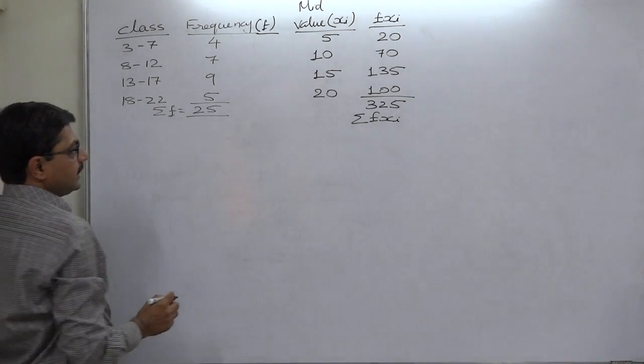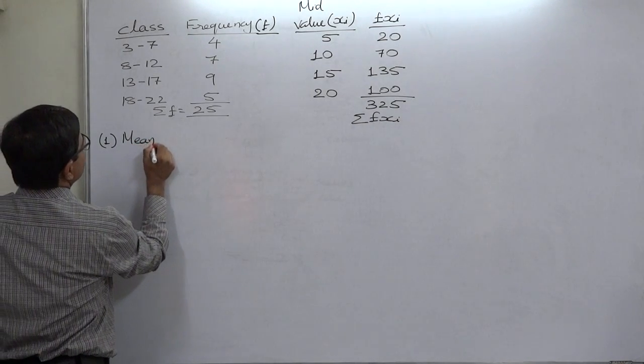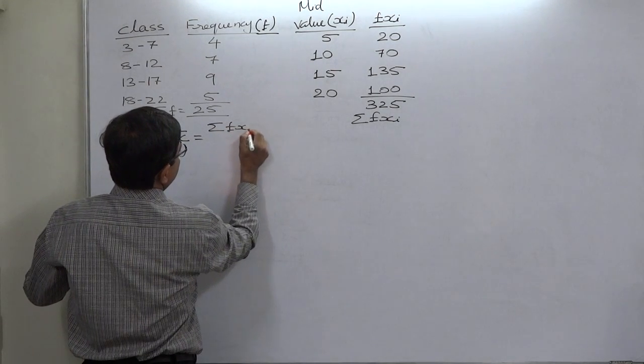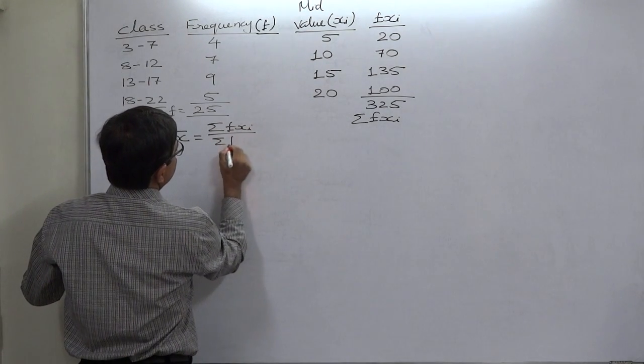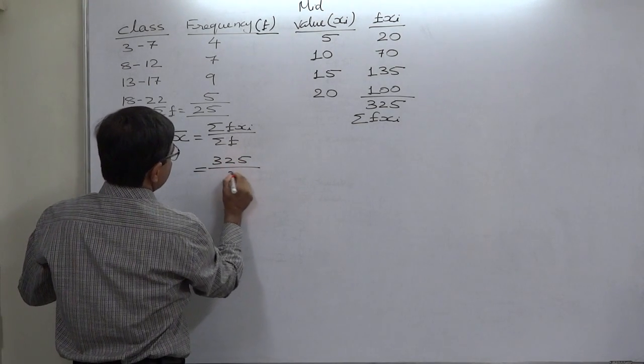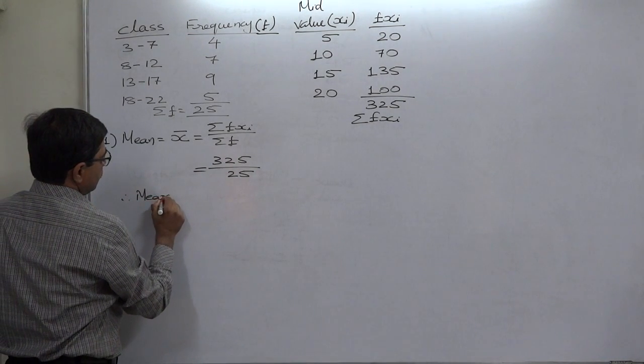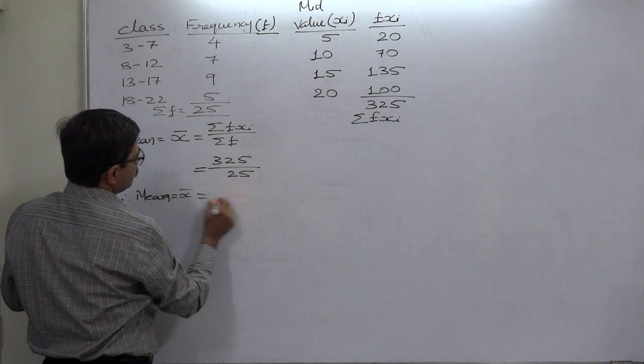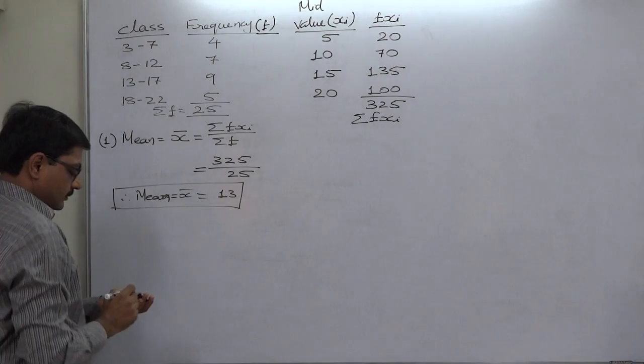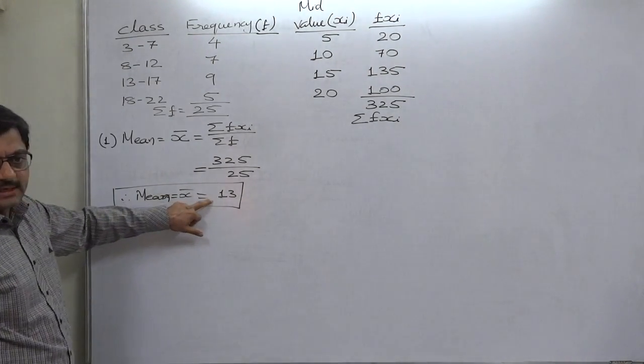Now let us first find the mean. Mean equals sigma fx divided by sigma f, so 325 divided by 25. The mean or x bar comes to 13. Now we have the mean and it is an integer value.